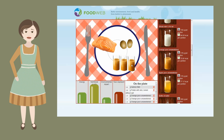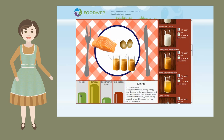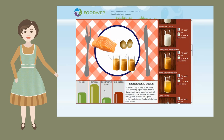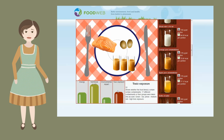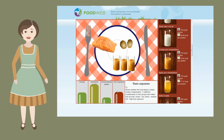There are four indicator bars: energy, nutritional quality, environmental impact, and toxic exposure. The indicator bars show positive and negative impacts for health and the environment of food products on the plate. The green indicator bar expresses a positive impact and the red indicator bar a negative impact.